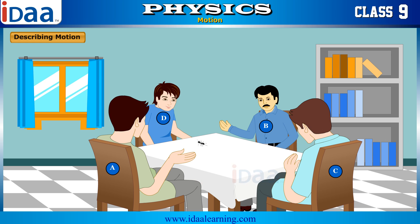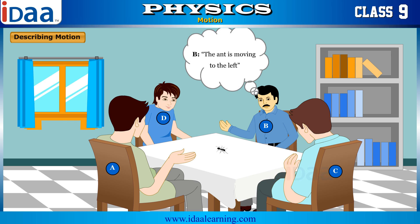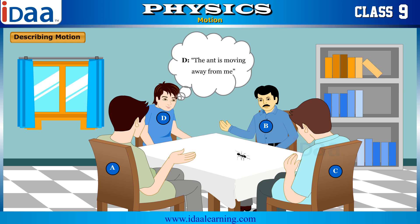A started describing the motion of the ant. A says the ant is moving to the right. B says the ant is moving to the left. C says the ant is moving towards me. D says the ant is moving away from me.